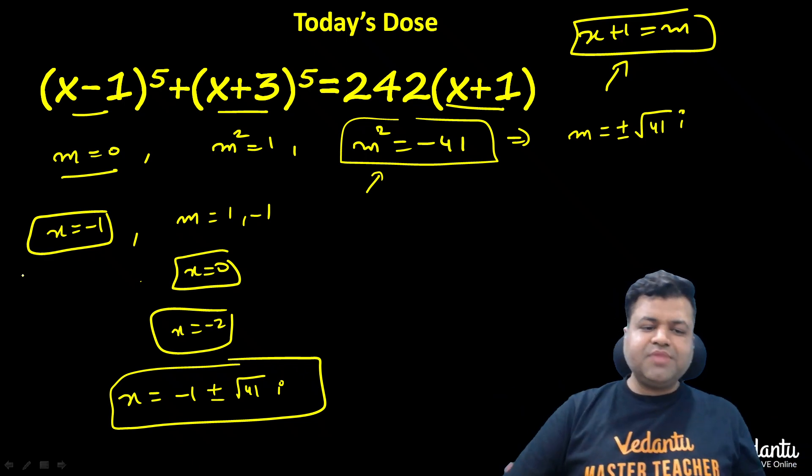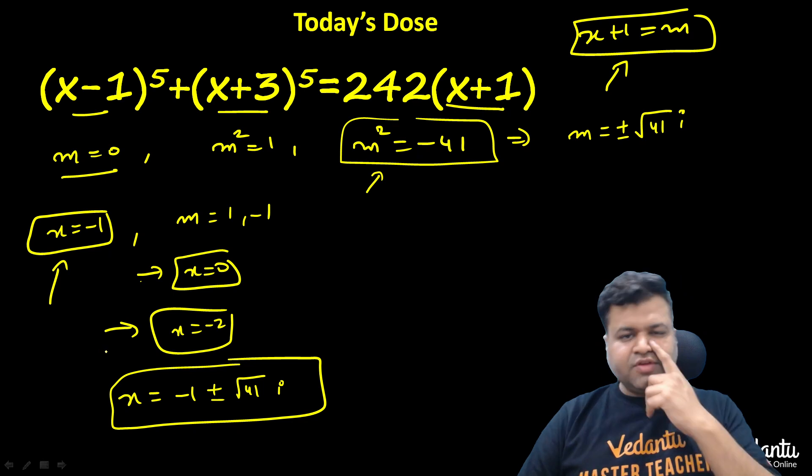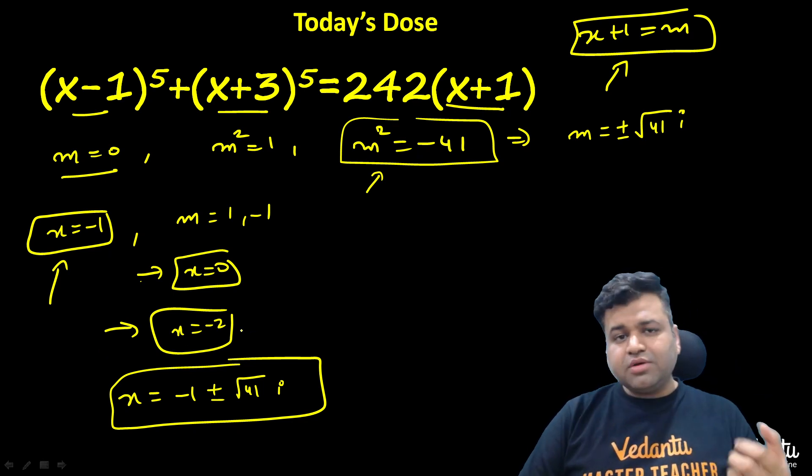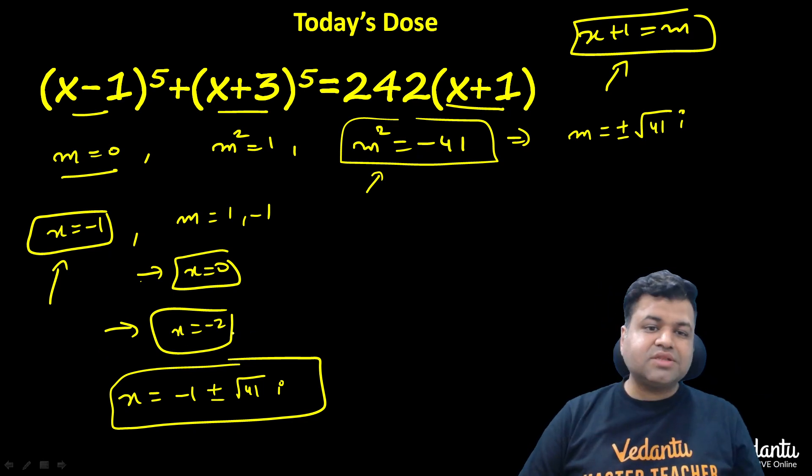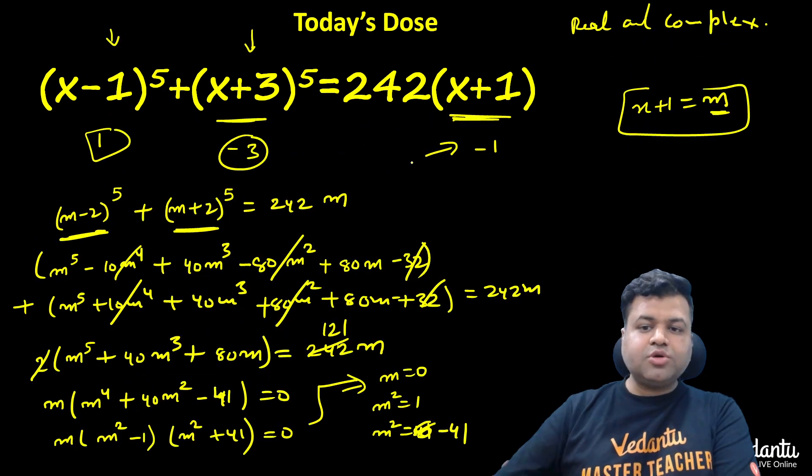Obviously, we can find these three solutions from hit and trial. After removing these three solutions, we could have gone for cubic by quadratic, and quadratic we know how to solve. But yes, this is a different approach.